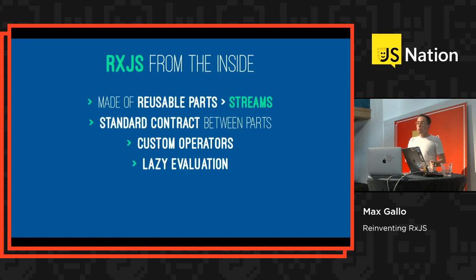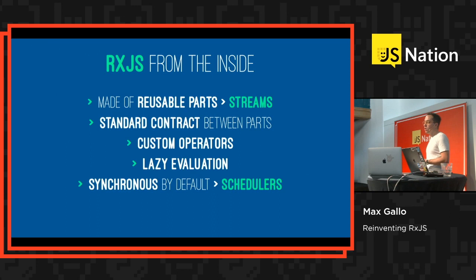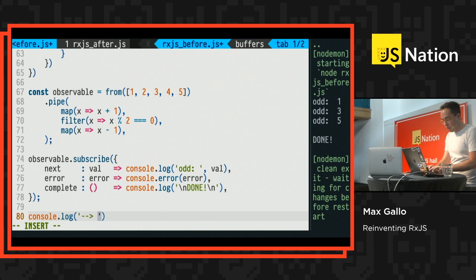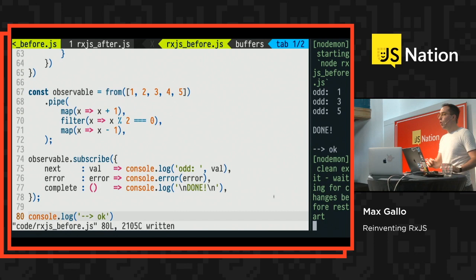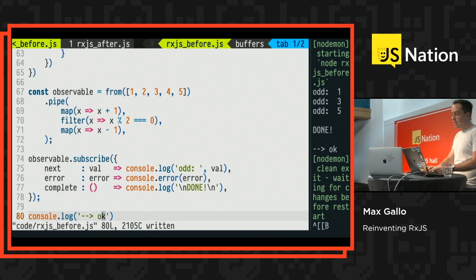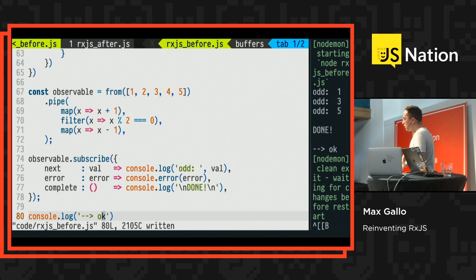Last but not least: all of this is synchronous by default. If I add a `console.log` after the subscribe call, you'll see it executes after all the RxJS magic — everything happens before the next line of code. That makes it a bit more readable for debugging and stack traces. But RxJS is also used for performance-heavy tasks, and sometimes you can't rely on purely synchronous execution.